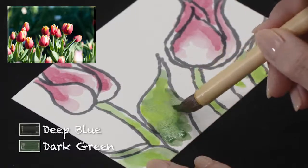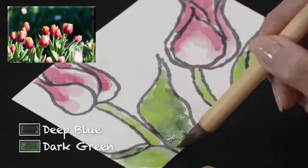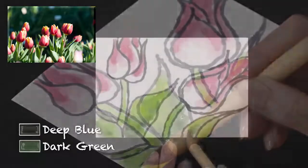With the gradient brush, mix a little deep blue with dark green to color in the shadow of the leaves.